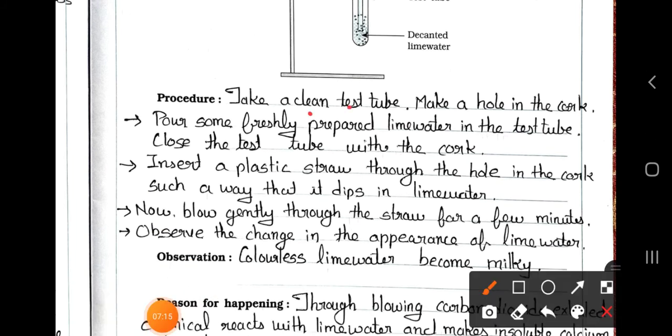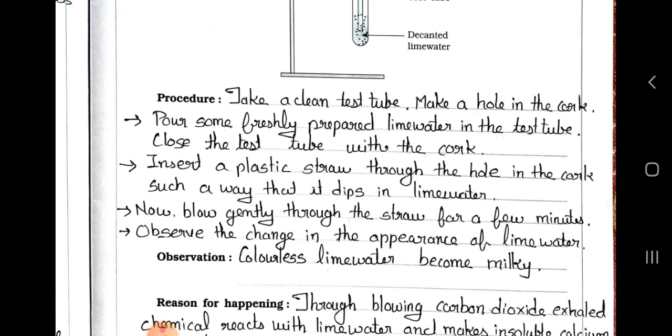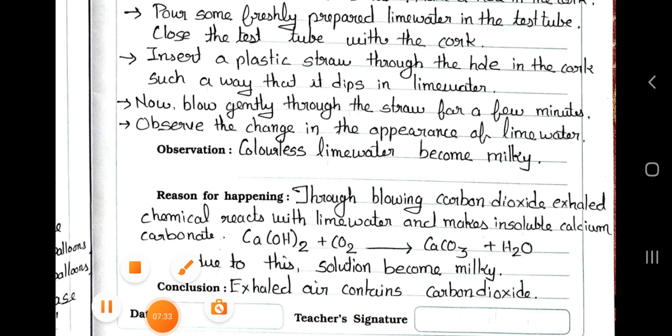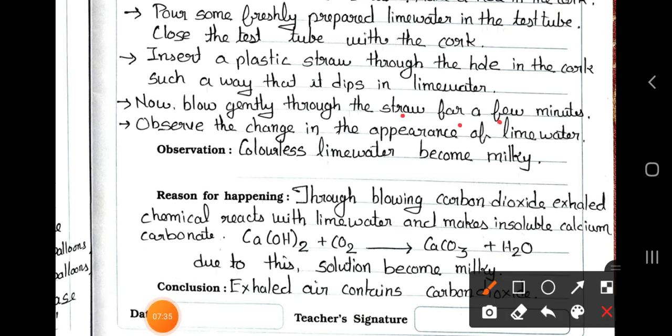Insert a plastic straw through the hole in the cork such a way that it dips in the lime water. Now blow gently through the straw for a few minutes. Observe the change in the appearance of lime water. Observation: Colorless lime water becomes milky.